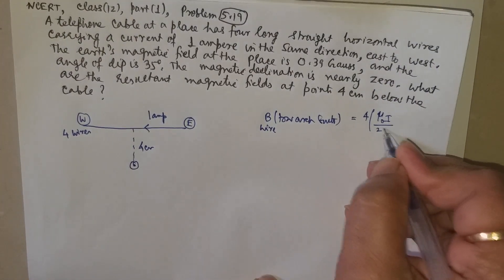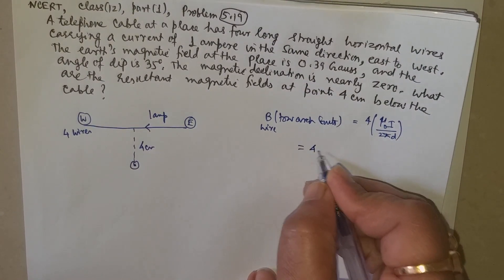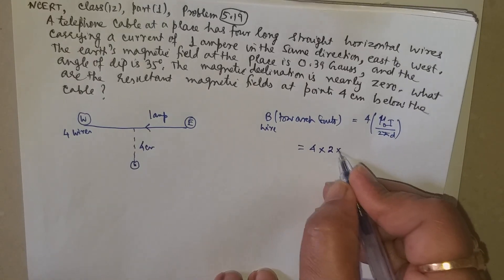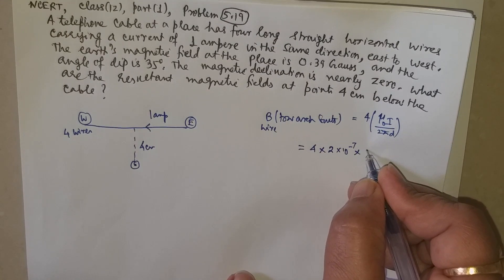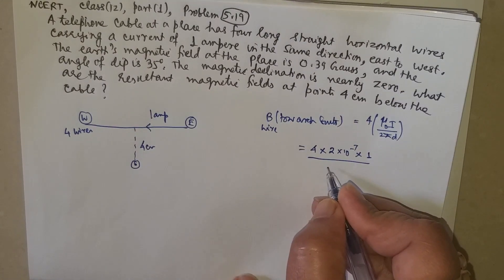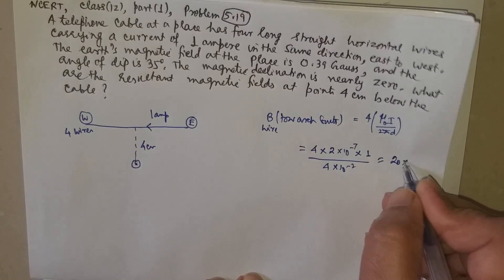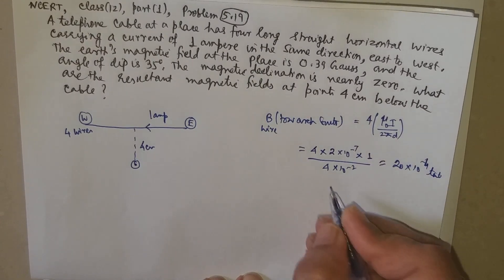So it will be four times μ₀i divided by 2πd. So it will be around 4 into 2 × 10⁻⁷, current is 1 ampere each, divided by the distance 4 × 10⁻². It comes out to be 20 × 10⁻⁴ tesla, which we can say is 20 gauss.